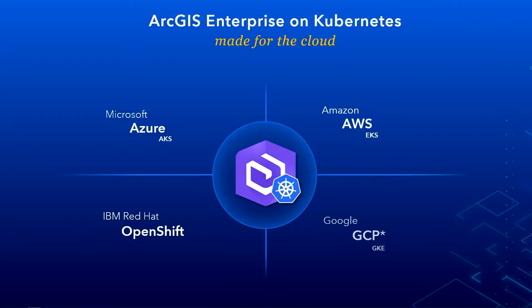It's made for your enterprise cloud, whether it's on-premises, in your private cloud, or in your public cloud. Our first release will support Microsoft Azure and its managed Kubernetes environment called AKS. We also support Amazon AWS, and its managed environment is called EKS, and on Red Hat's OpenShift. In a subsequent release, we plan to support Google GCP, and its managed Kubernetes environment is called GKE.